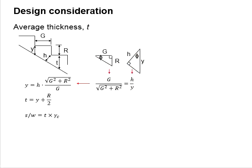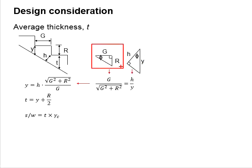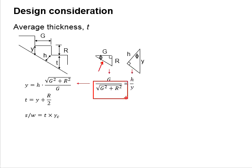We take the ratio between h and y. H is the side adjacent to angle phi, and y is the hypotenuse. Based on the relationship between the going g and the hypotenuse length, and applying the Pythagorean theorem, the hypotenuse length equals the square root of g squared plus r squared. Rearranging the equation gives the formula for y in terms of h, g, and r.